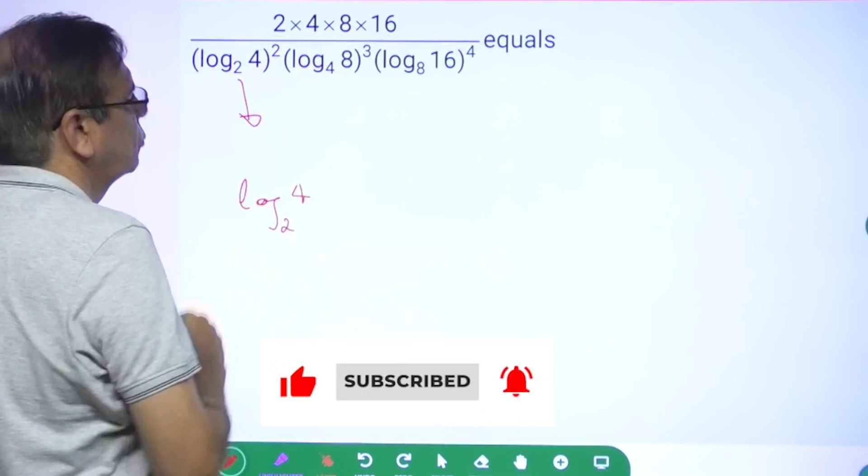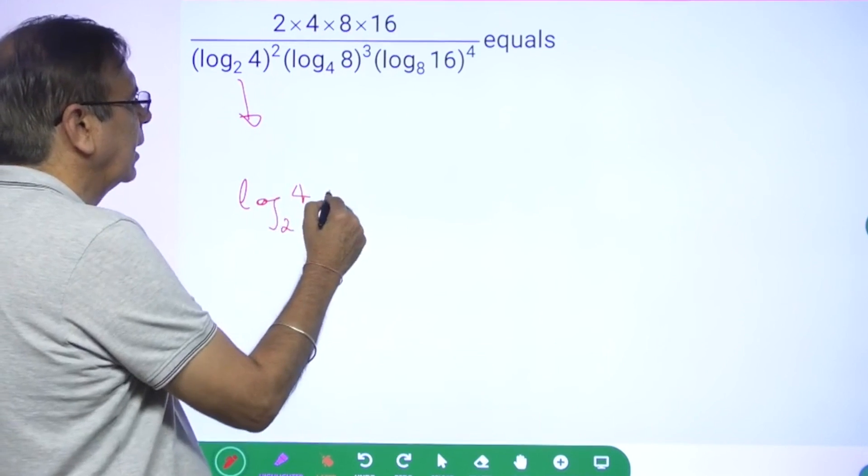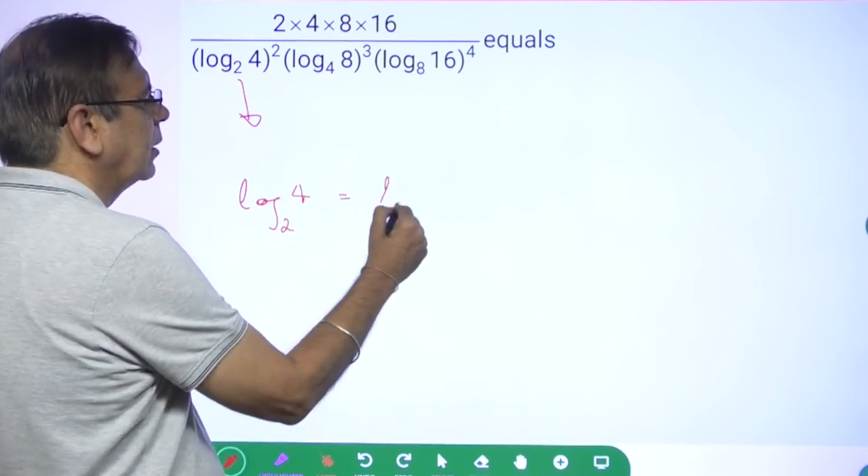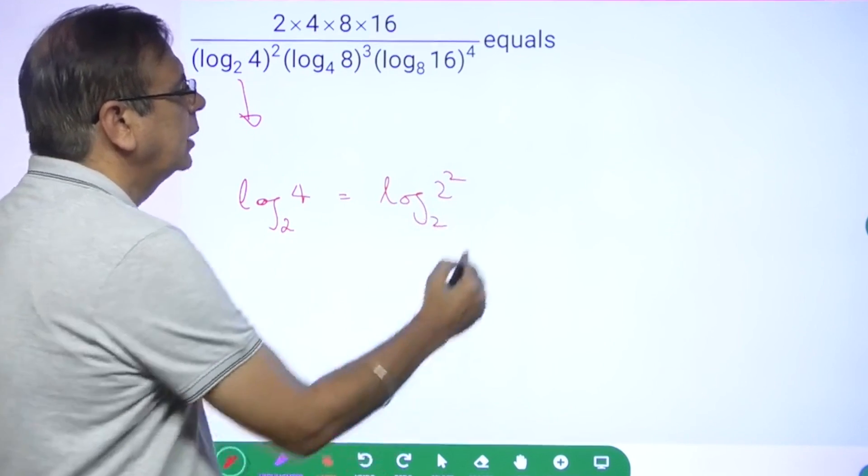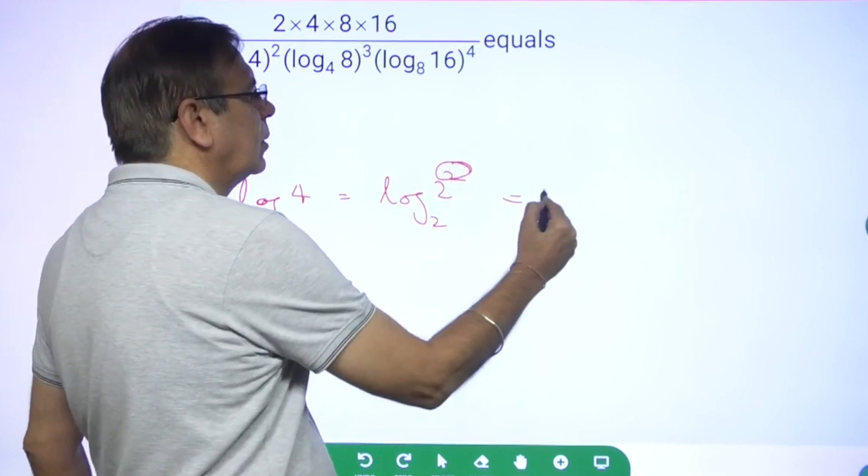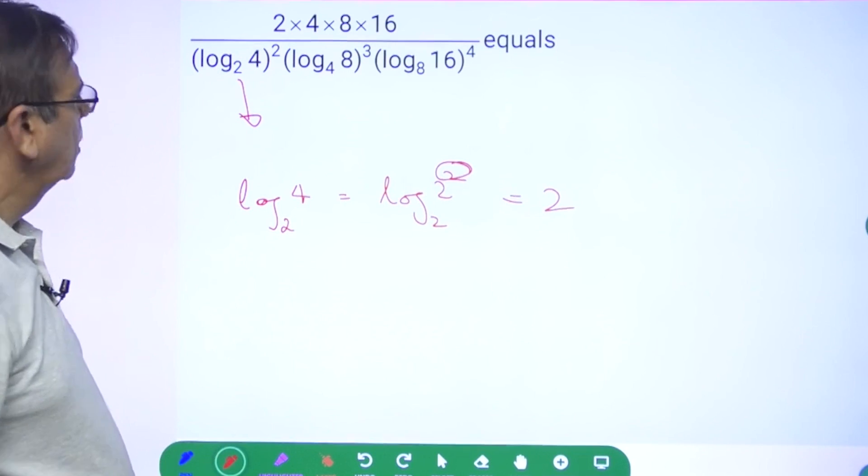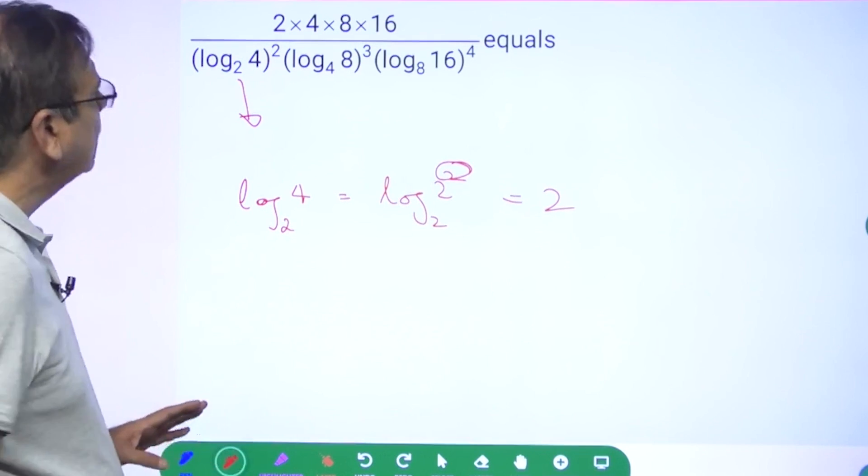log of 4 base 2. Can I say this is the same as log of 2 square base 2? What is the value going to be? The value will be 2, isn't it? No issues at all. Now let's look at the second one.